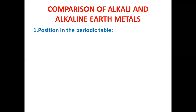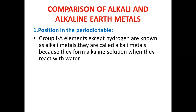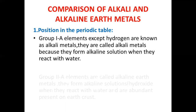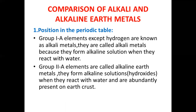The first comparison is position in the periodic table. Group 1A elements of the periodic table, except hydrogen, are known as alkali metals. Hydrogen is a non-metal, but due to similarity in electronic configuration it has been assigned a place in group number one. The other elements of group one are called alkali metals because they form alkaline or basic solutions — hydroxides — when they react with water.